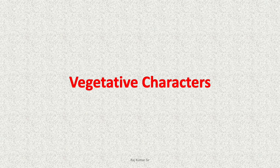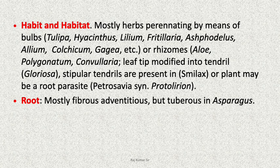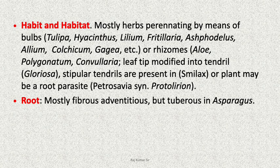Now the vegetative characters. With regard to habit and habitat, most are herbs perennating by means of bulbs like Tulipa, Hyacinthus, Lilium, Fritillaria, Asphodelus, Allium, Colchicum, Gagea, etc., or by means of rhizomes as in Aloe, Polygonatum, Convallaria. Leaf apex is modified into tendrils in Gloriosa. Stipular tendrils are present in Smilax, or the plant may be a root parasite as in Petrosavia, synonym Proto-Lirion. Roots are mostly fibrous and adventitious but tuberous in Asparagus.